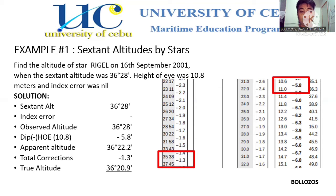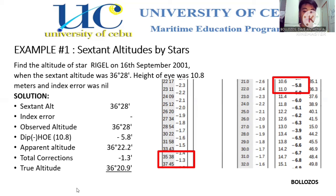For the dip, the height of eye was given as 10.8 meters. In the nautical almanac table, 10.8 meters falls between 10.6 and 11.0, so we take the middle value of 5.8. So 36 degrees 28 minutes minus 5.8 minutes gives us an apparent altitude of 36 degrees 22.2 minutes. For the total correction, 36 degrees 22.2 minutes falls between 35 degrees 38 minutes and 37 degrees 45 minutes, giving a total correction of 1.3 minutes. Subtracting that from the apparent altitude gives a true altitude of 36 degrees 20.9 minutes.